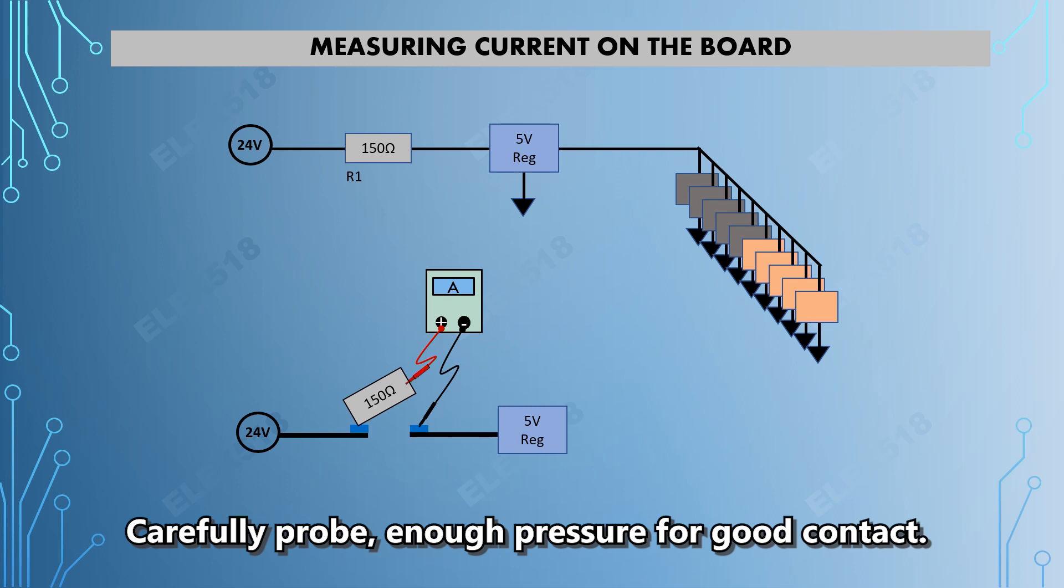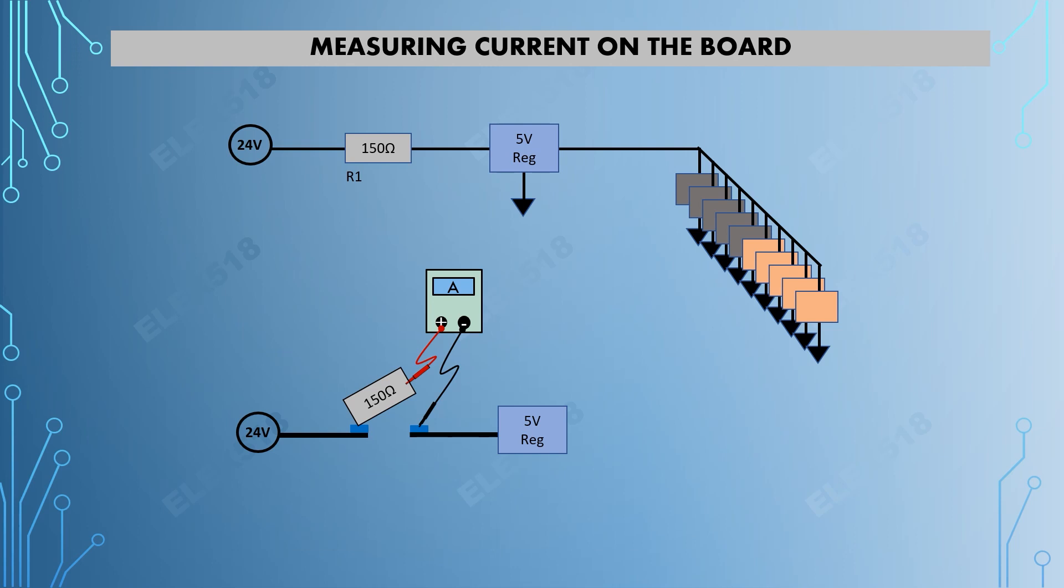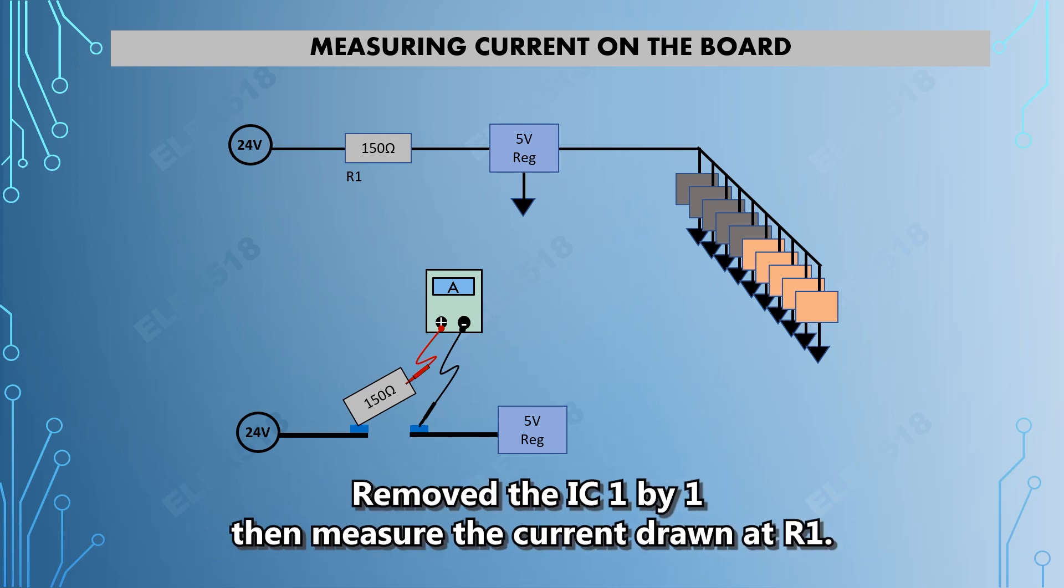Considering R1 is such a huge component, I can directly probe the multimeter as shown in the illustration, in which the multimeter is configured to measure current. After the setup, what I did next was the isolation method by removing the ICs one by one.